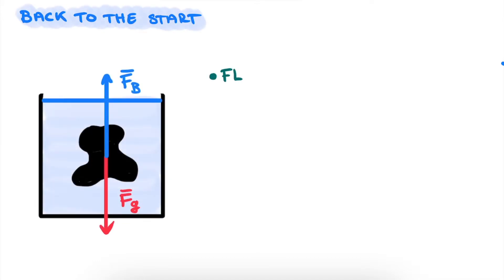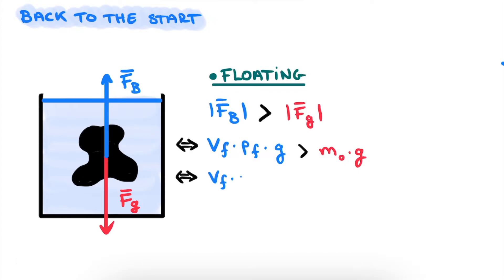At this point, we can return to the original situation with an object of unknown density. We found that an object floats when the buoyancy force is larger than the force of gravity. Now we can rewrite these forces with what we have found. The buoyancy force is the submerged volume multiplied by the density of the fluid multiplied by g. And gravity is simply the mass of the object multiplied also with g. And again, the mass of the object can be written as the volume of the object multiplied with the density of this object.